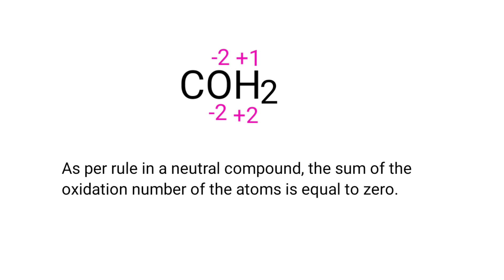As per rule in a neutral compound, the sum of the oxidation number of the atoms is equal to 0. So, the numbers along the bottom must add up to 0. So, the number under C must be 0.